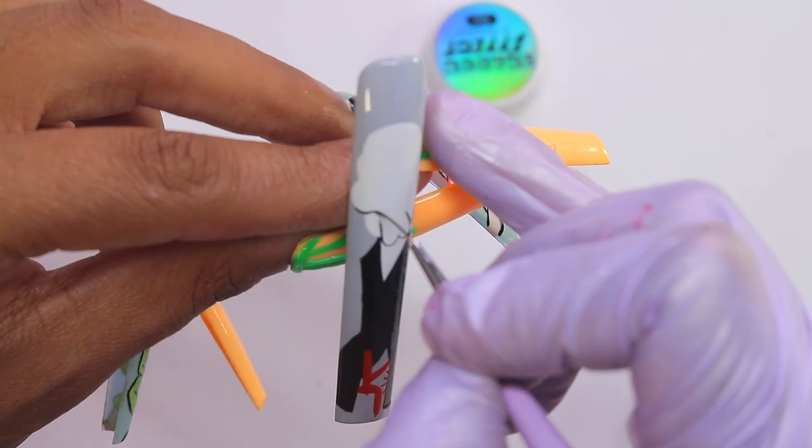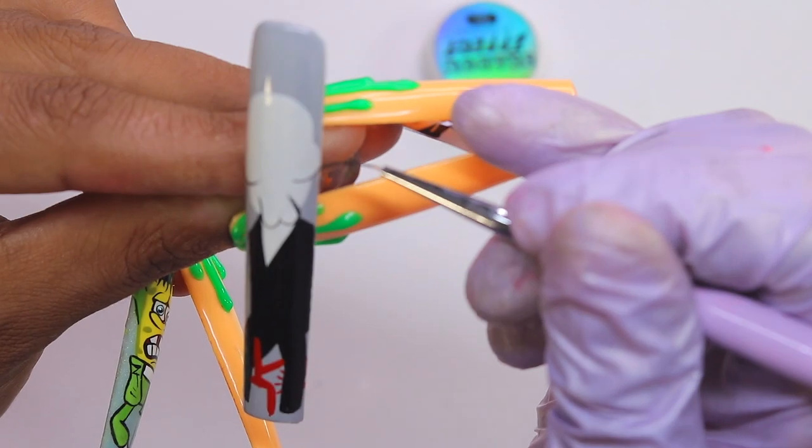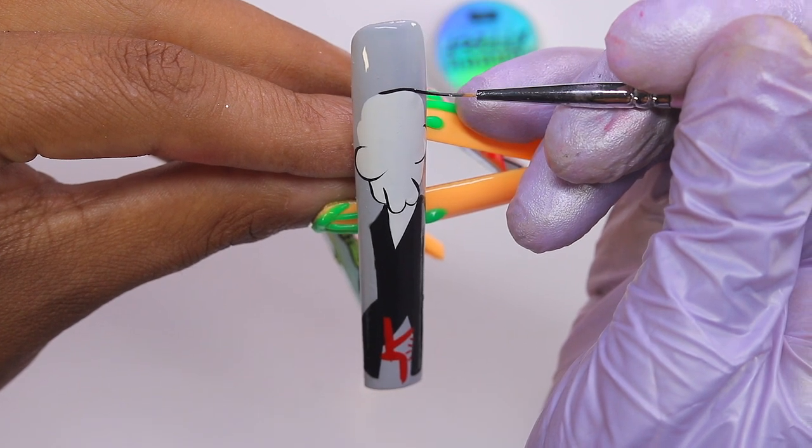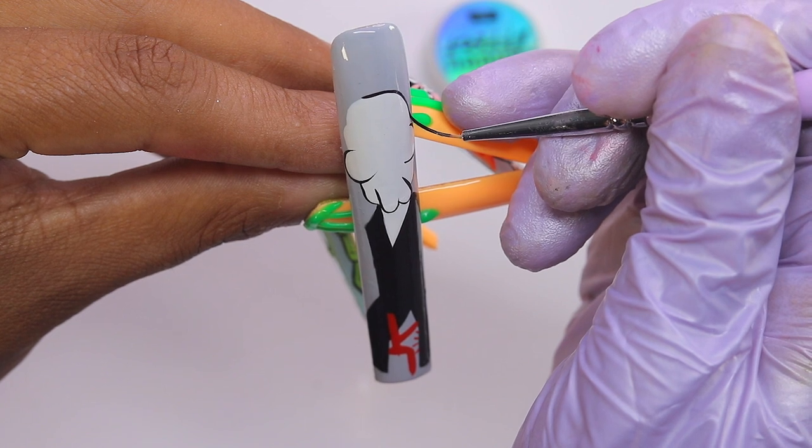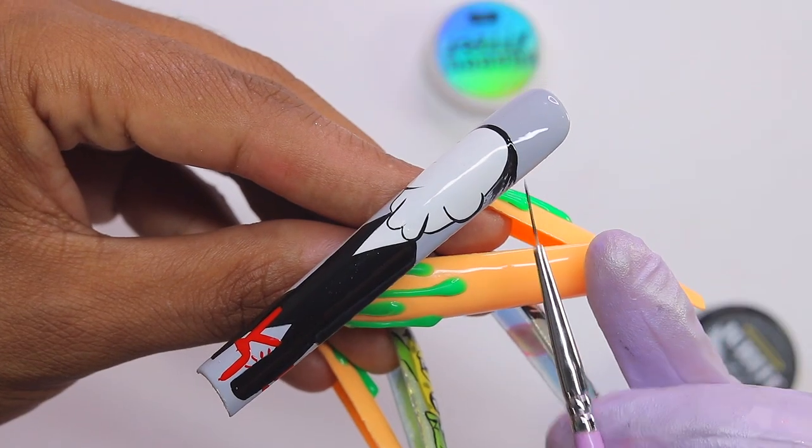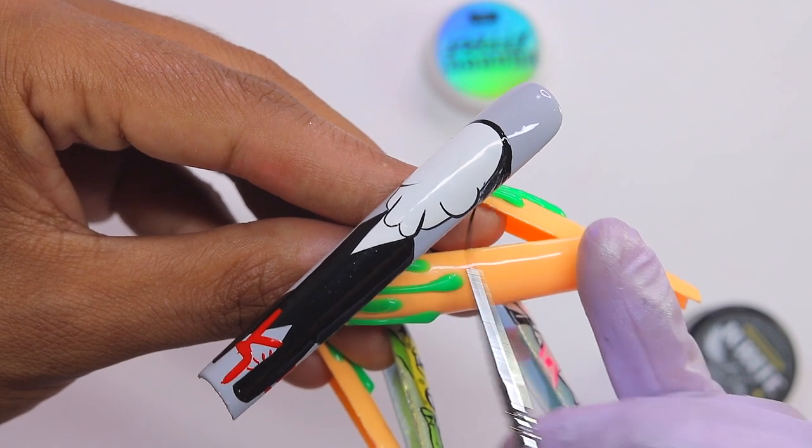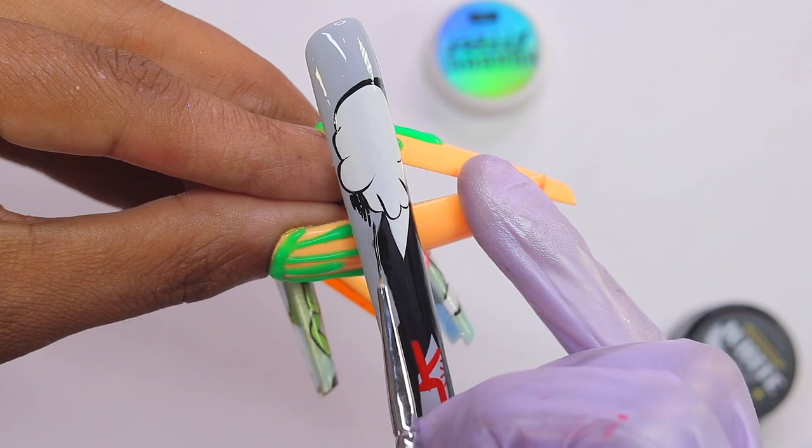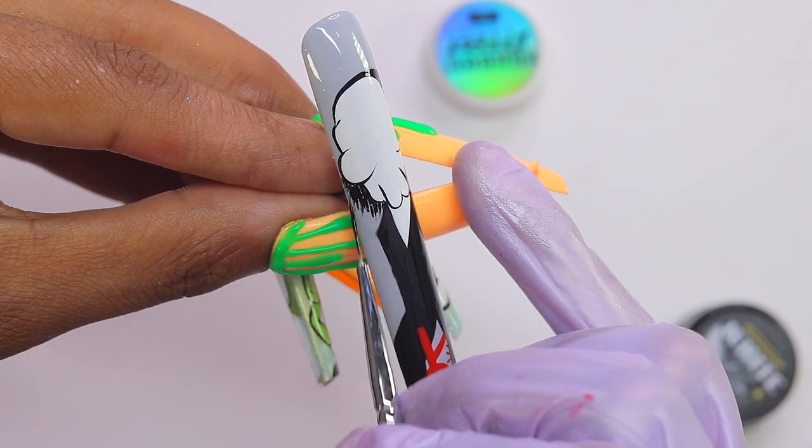Now that we finally got the base down we are now just going to start doing the details. You want to make sure that your lines are fine and skinny, not too thick. On the right side of his head I will begin by doing his hair. You don't want to be too perfect with this, just add a whole bunch of random lines going down like this.